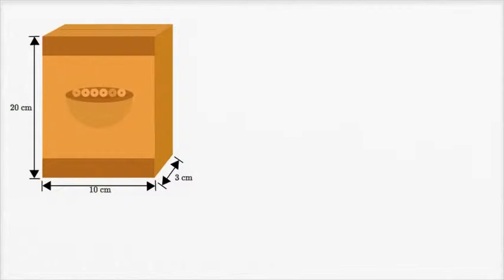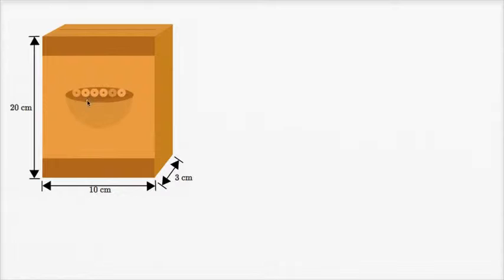Let's see if we can figure out the surface area of this cereal box. There are a couple of ways to tackle it. The first way is to figure out the surface area of the sides we can see, then think about the sides we can't see, how they relate, and add them all together.